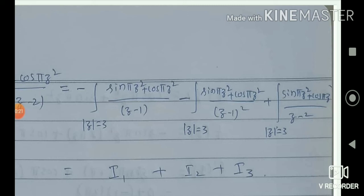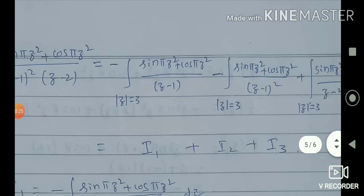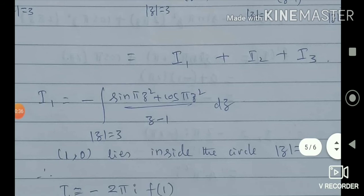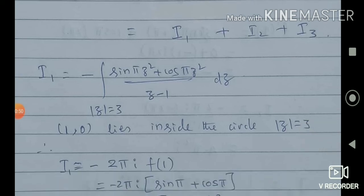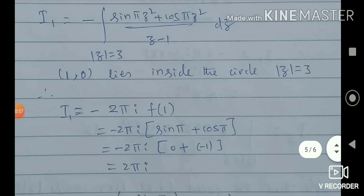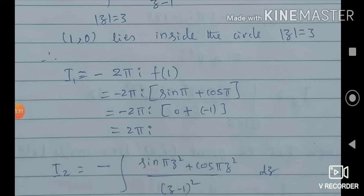With a = −1, b = −1, and c = 1, we get three integrals I1, I2, and I3, all integrated over the closed circle of radius 3. For I1: integrate minus [sin(πz²) + cos(πz²)] divided by (z minus 1). Here a = 1, f(z) = sin(πz²) + cos(πz²), and the point (1, 0) lies inside mod z = 3. Applying Cauchy's formula: f(1) = sin(π) + cos(π) = 0 + (−1) = −1. So I1 = minus 2πi times (−1) = 2πi.